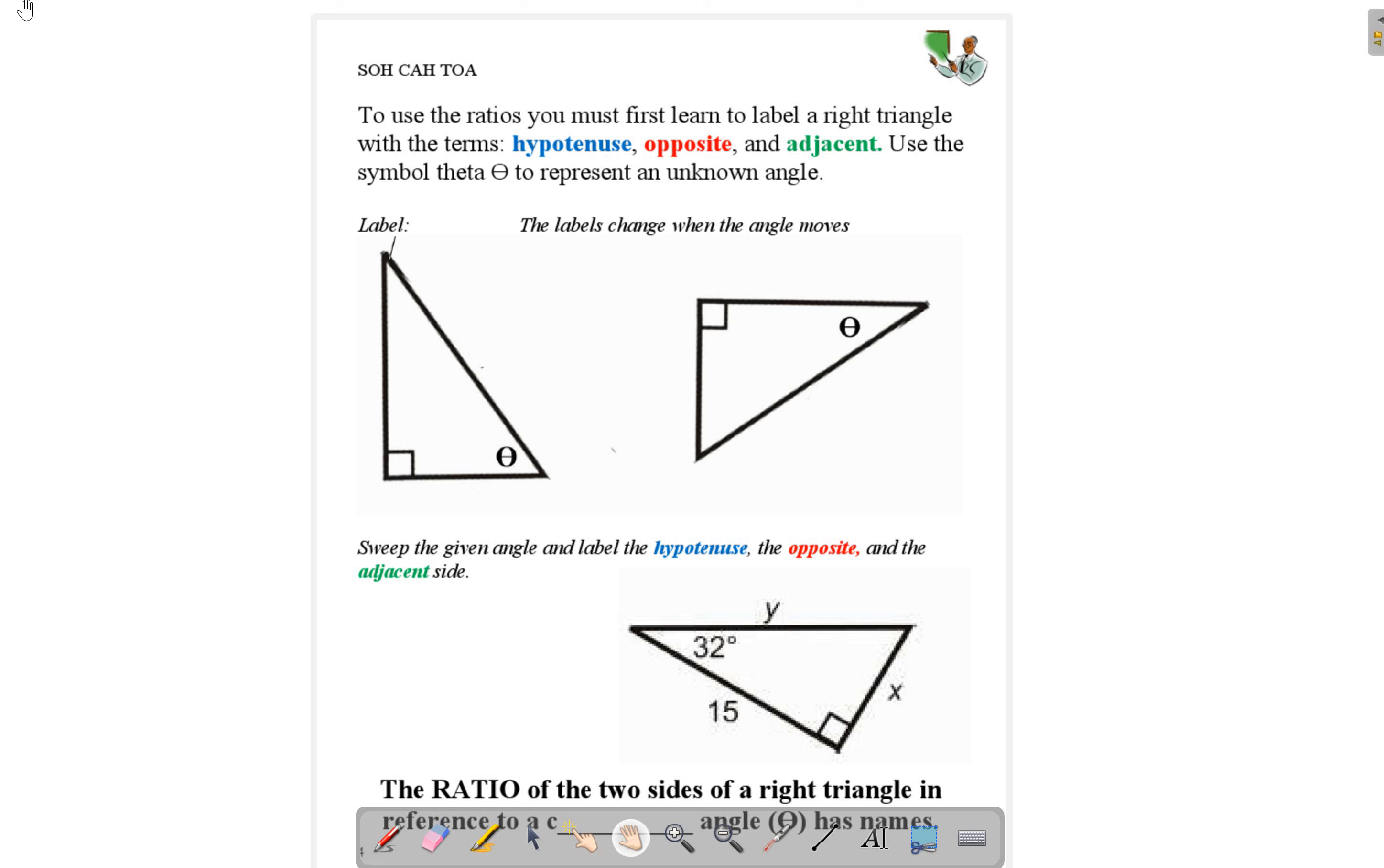Students, this is lesson 8.1 part 2. For this one we need to talk about new vocabulary called opposite, adjacent, and hypotenuse.